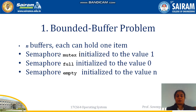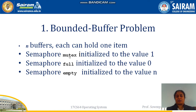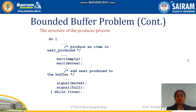The bounded buffer is shared between producer and consumer, where the producer produces data to the buffer and the consumer consumes data from the same shared bounded buffer. There are n buffer slots, each holding one item, and three semaphores: mutex initialized to 1, full initialized to 0, and empty initialized to n.